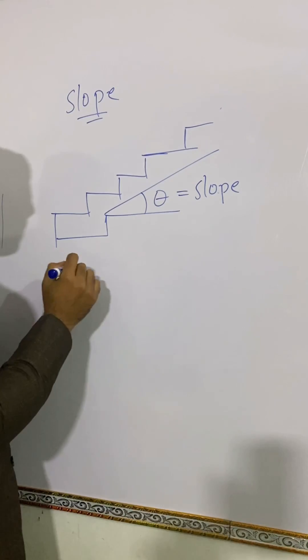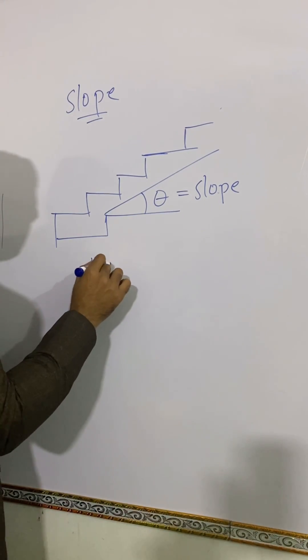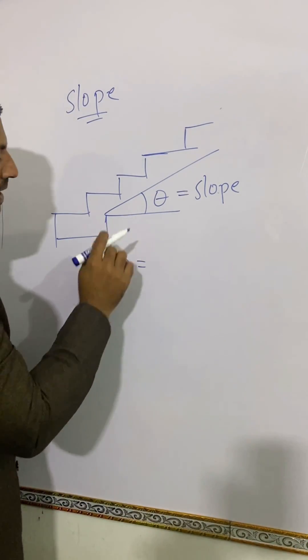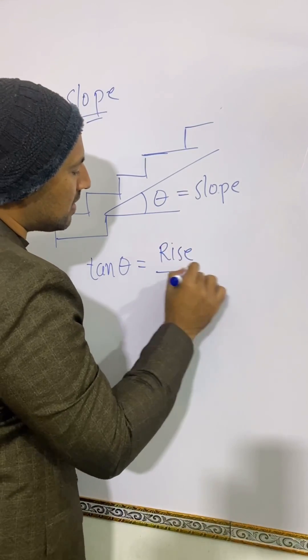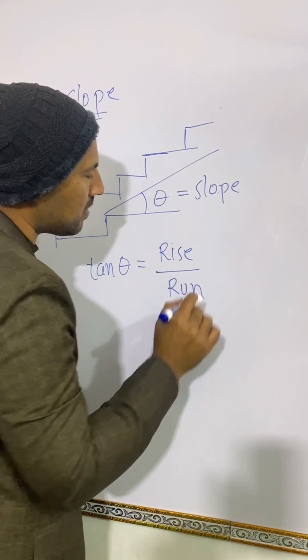This can be determined by using a trigonometric ratio known as tangent theta, and it is just the rise over run.